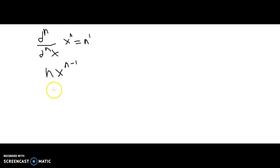But what if we kept going with that? Well, the second derivative of x to the n is just n times n minus 1, pardon the terrible handwriting, times x to the n minus 2.